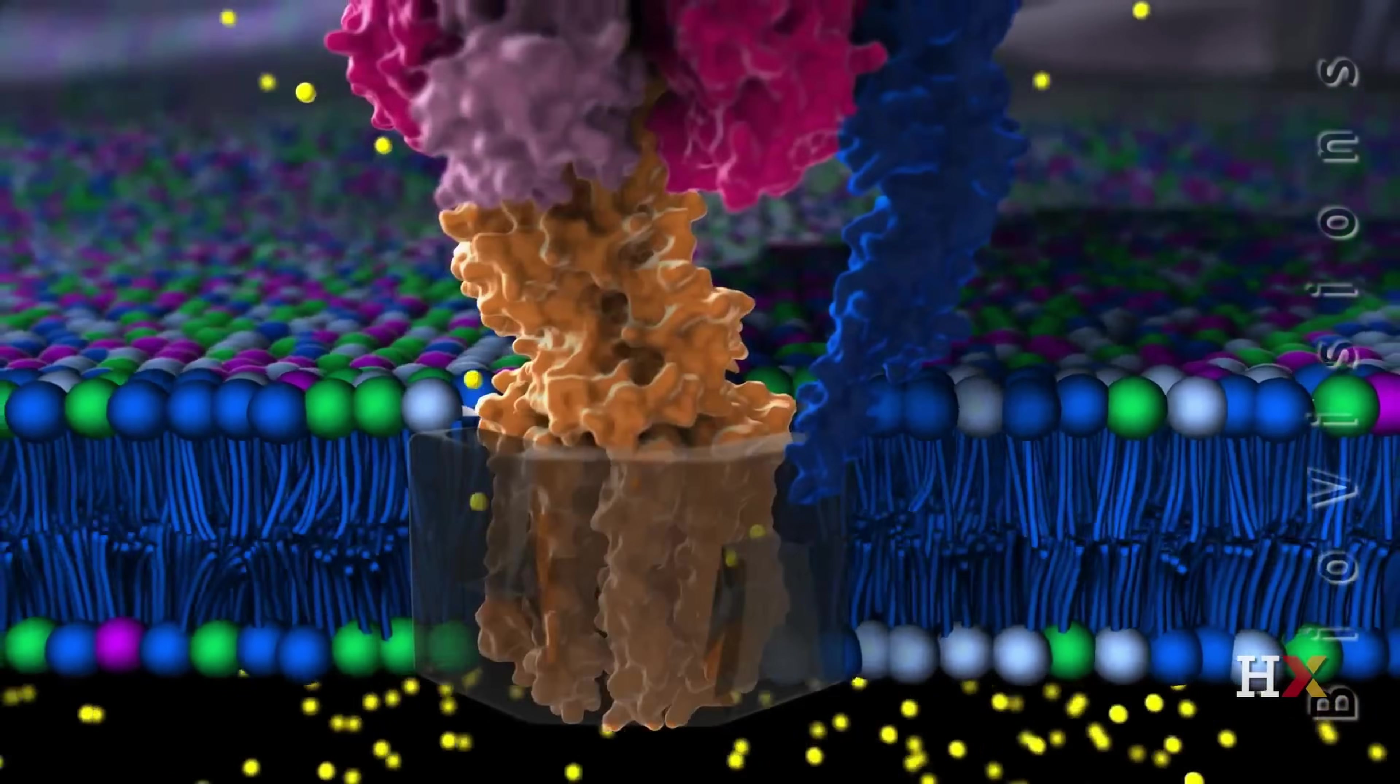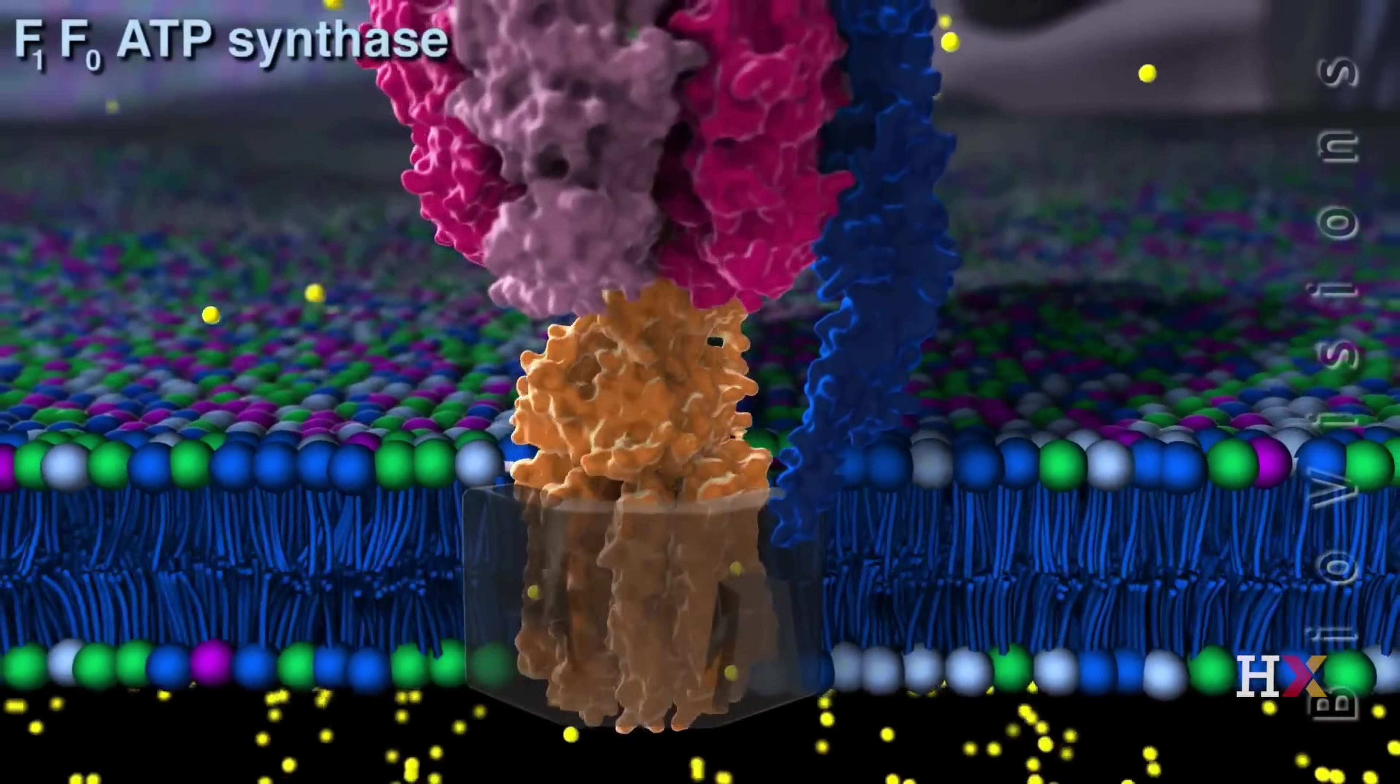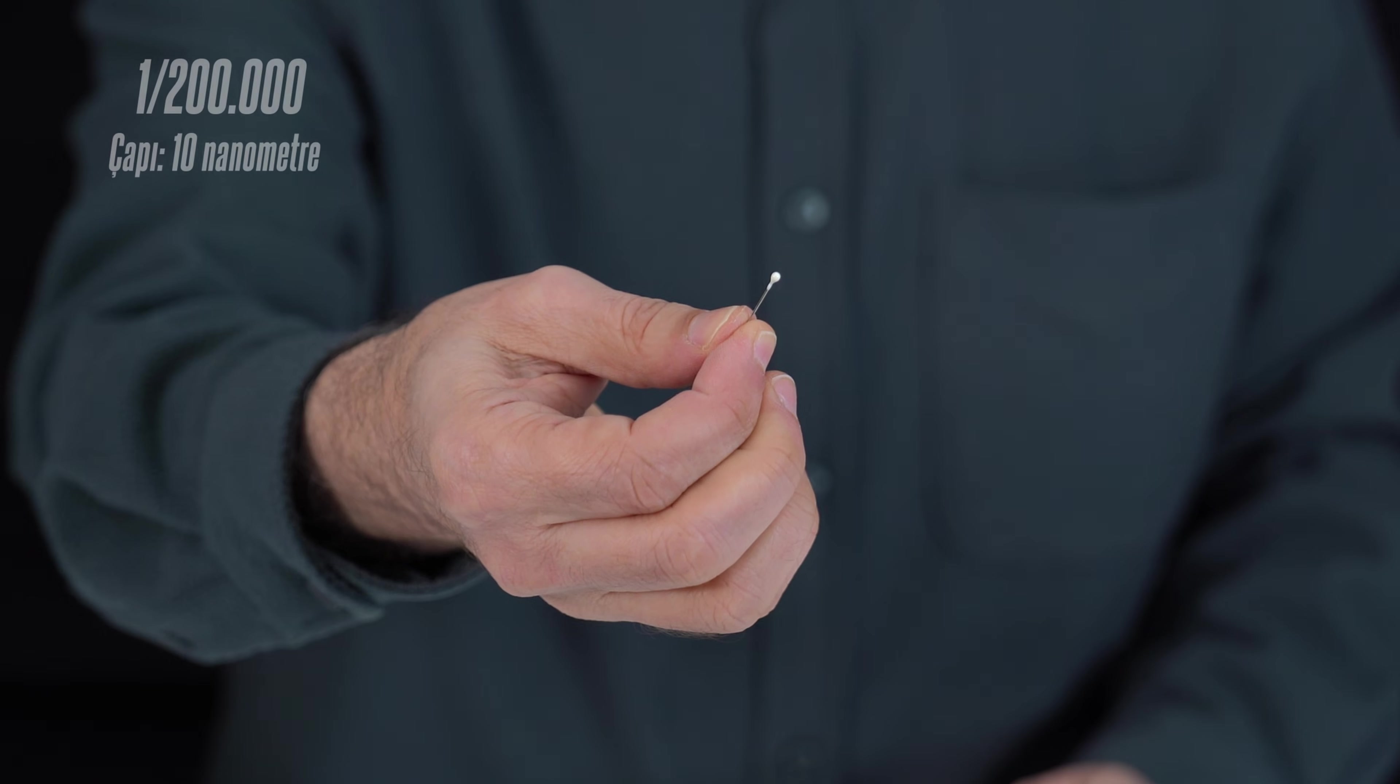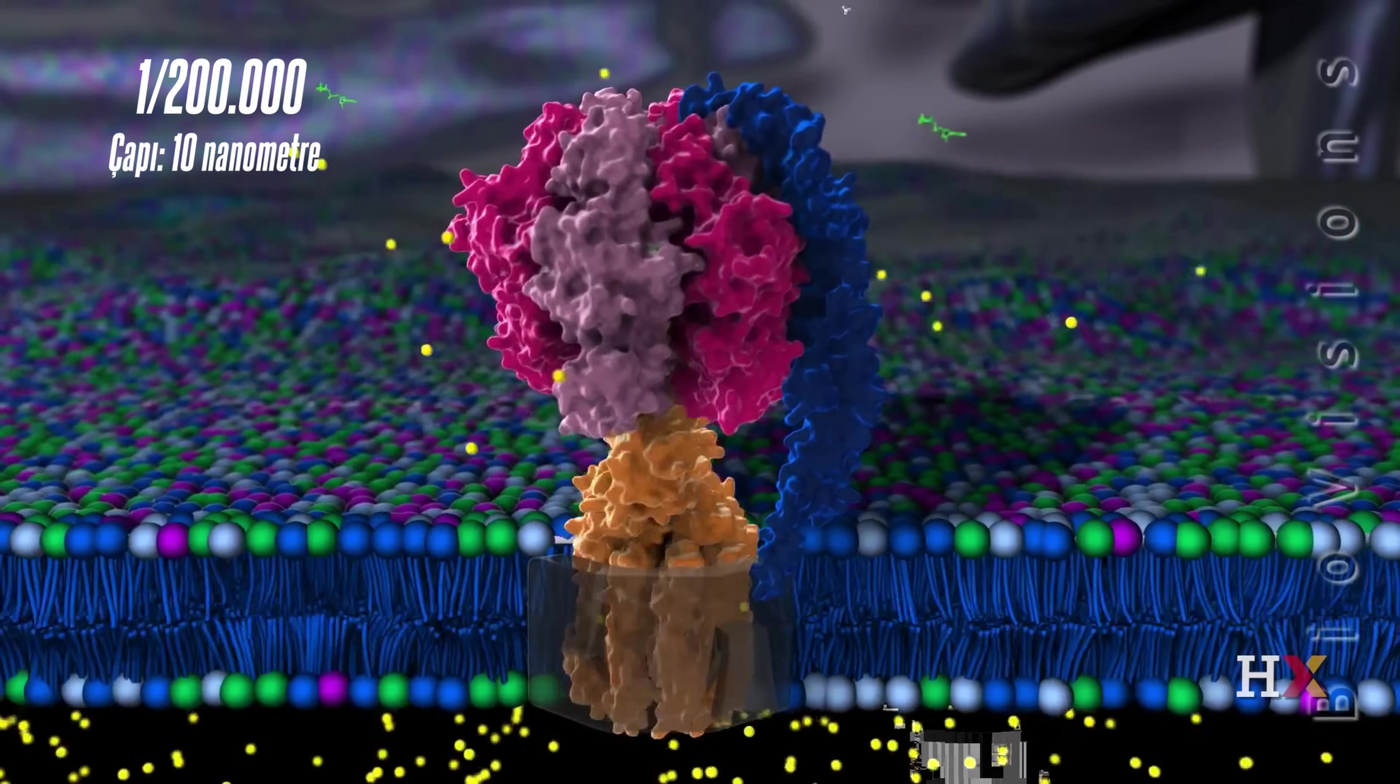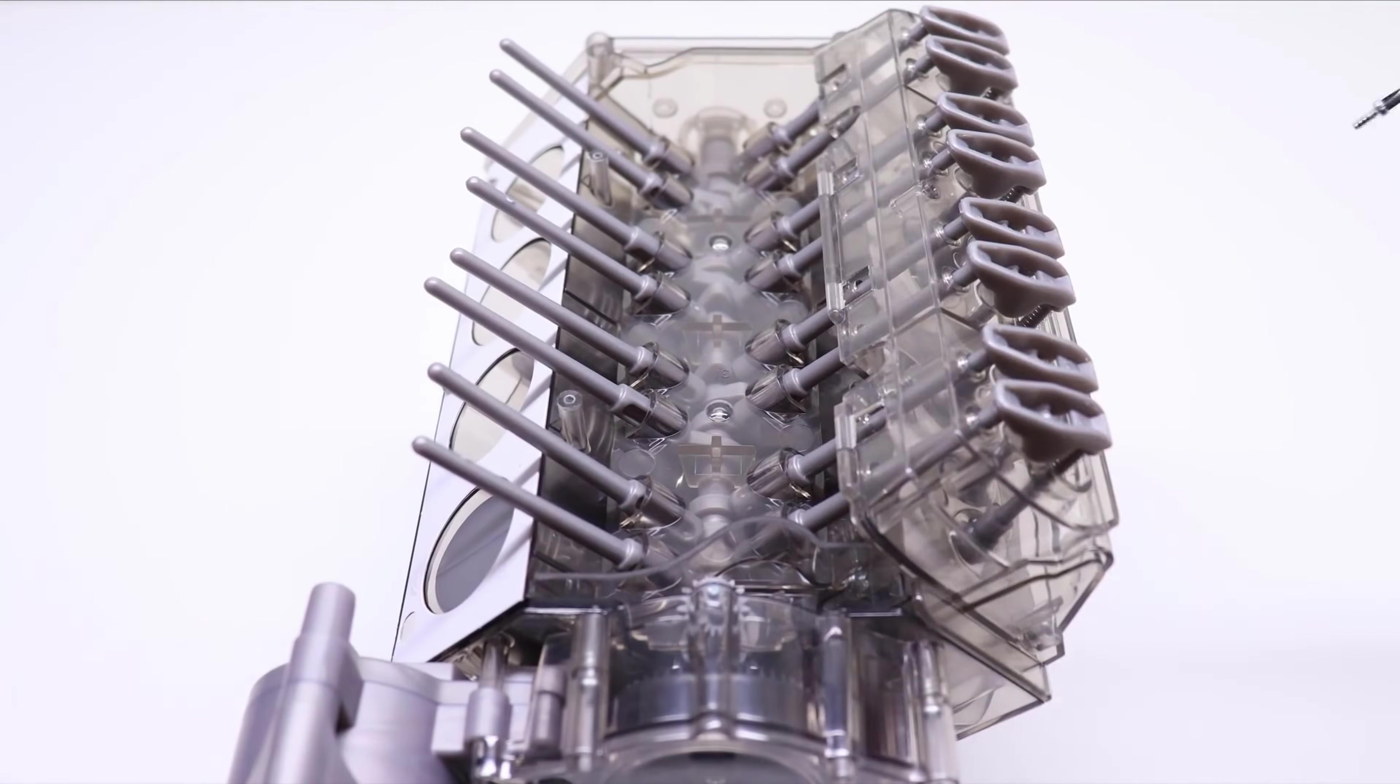Energy is produced in the ATP synthase motors located on the outer walls of mitochondria. ATP synthase motors are 200,000 times smaller than this pinhead. It's 10 nanometers in diameter. A molecular motor.